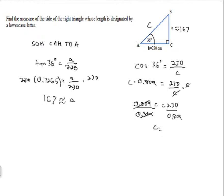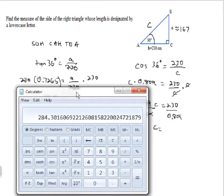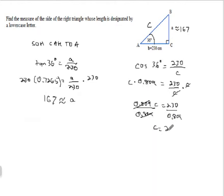And we get C is equal to, I'll do this on my calculator again, 230 divided by 0.809. And I get 284.3.